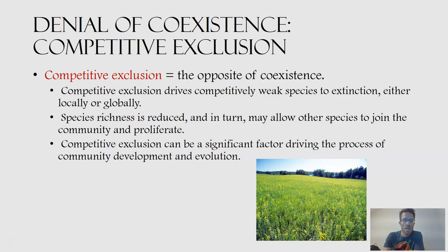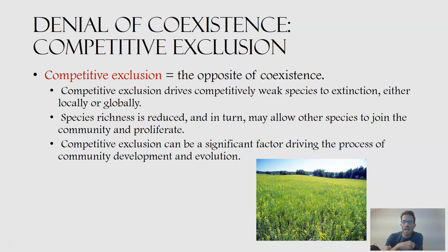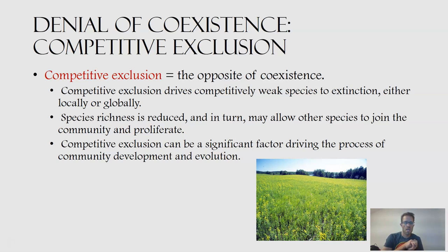Competitive exclusion is the opposite of coexistence. It drives competitively weak species to extinction, either locally, just in that area, or potentially globally. If one species is extirpated, species richness is reduced, but that in turn may allow other species to join the community and proliferate. If one species leaves, there's potentially niche space that's unfilled that a more competitively dominant species could move into. Competitive exclusion could be a significant factor driving community development and evolution.